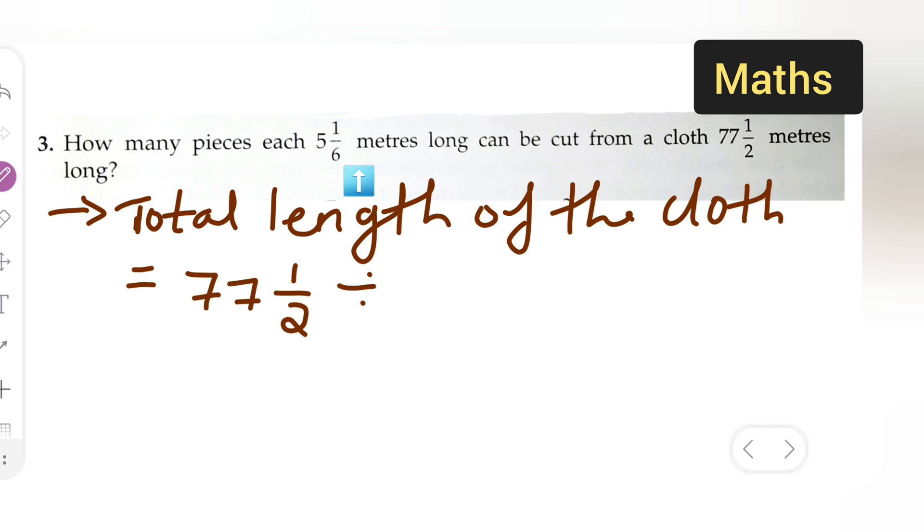This we have to divide by 5 and 1/6. So 5 and 1/6 meter long can be cut from this cloth. Basically we are dividing. Now what we will do with the mixed fraction form: we multiply the divisor with the whole number plus the remainder, all over the divisor.